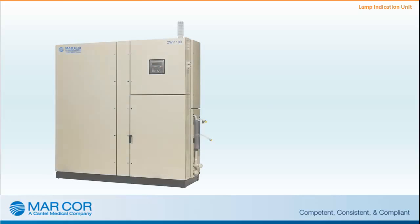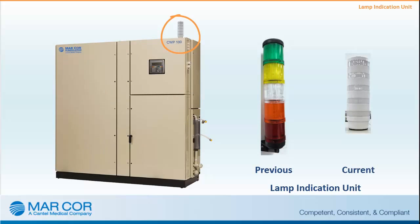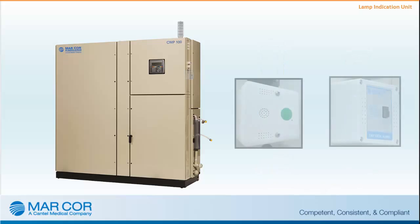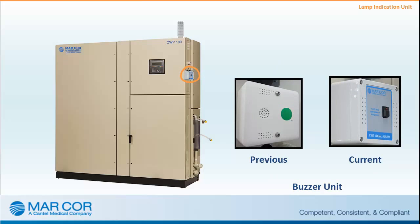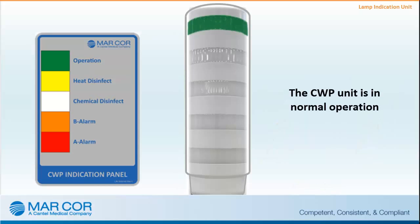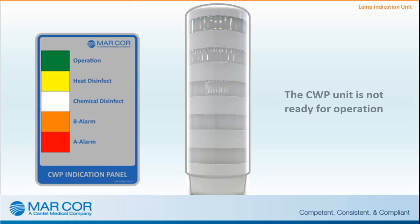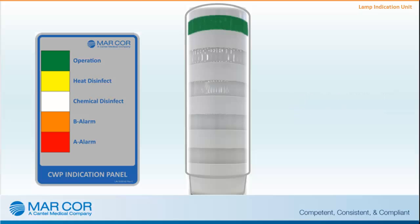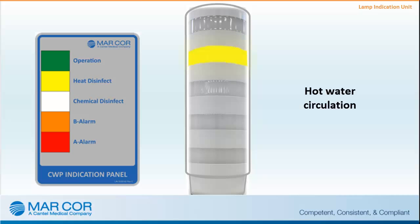The CWP unit is connected to the Lamp Indication Unit and Buzzer Unit. The Lamp Indication Unit gives information about the present state of the CWP unit. A separate additional light is placed in a suitable location with good visibility in the patient treatment area. The buzzer unit issues an audible alarm sound when an alarm occurs, and is silenced by pressing the button on the buzzer unit. A steady green light indicates normal operation. A blinking green light indicates the system is not ready for operation — occurring five minutes prior to startup, five minutes prior to a programmed shutdown, or when the return product water temperature is elevated. A steady yellow light indicates the pump in the heating unit is in operation, circulating hot water in the distribution loop.